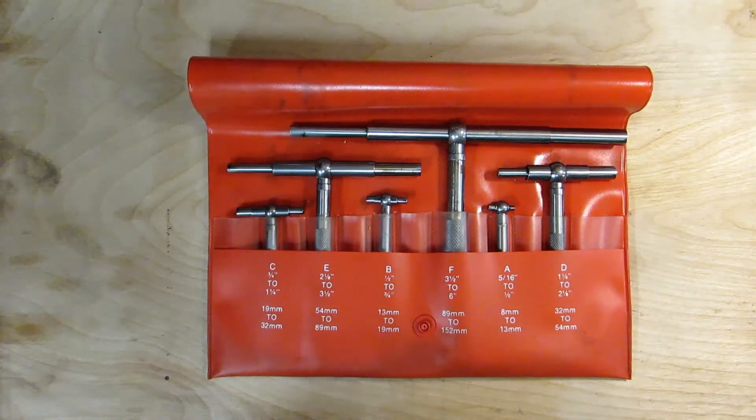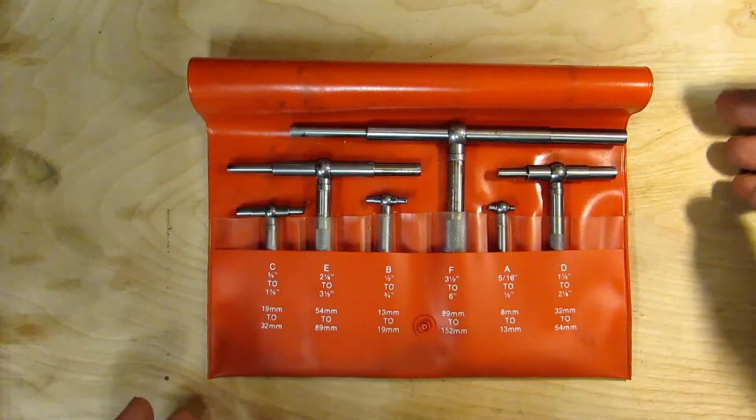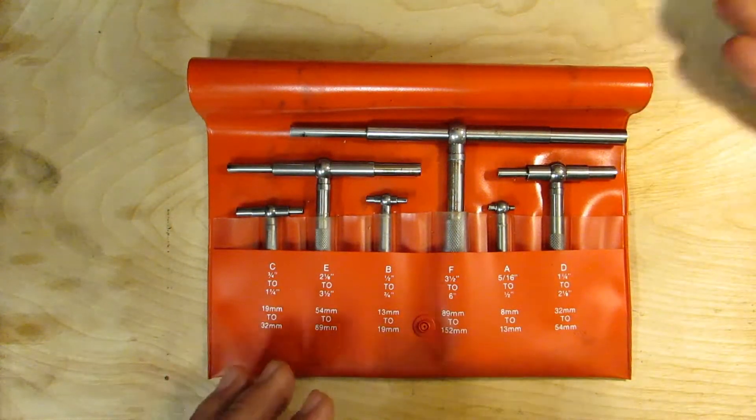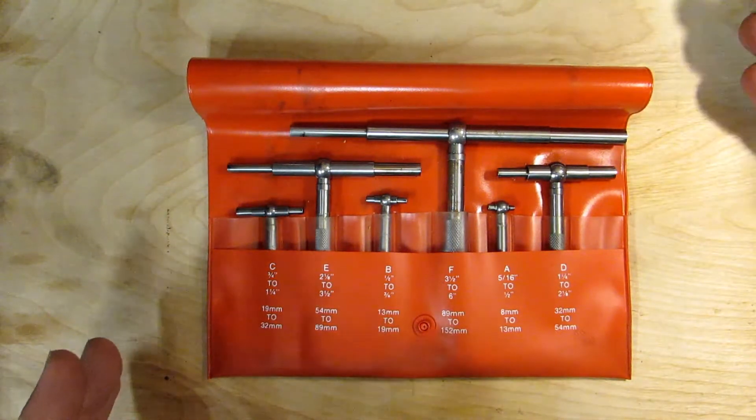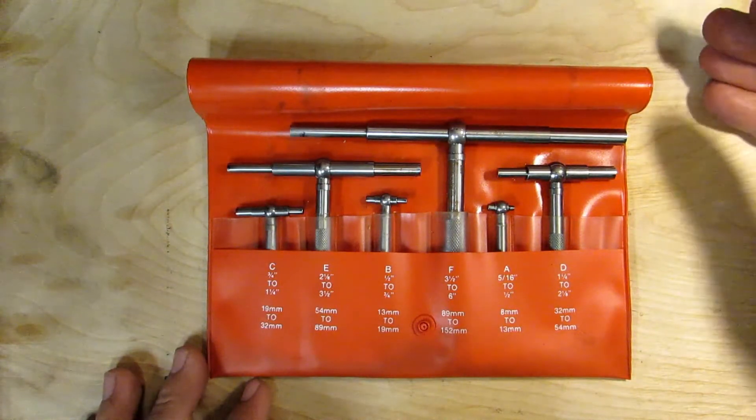Hi everyone. Today I'd like to talk to you about telescoping gauges. Telescoping gauges are used to measure the internal dimensions of a bore, either on the lathe or on the mill. It doesn't matter if it's round, we can use telescoping gauges to measure them.